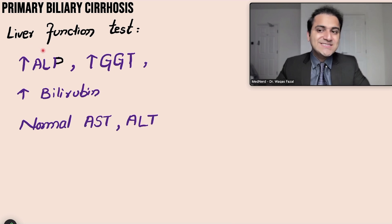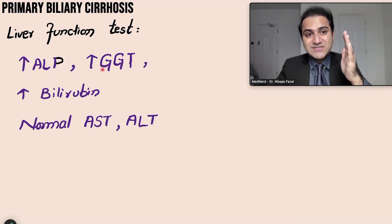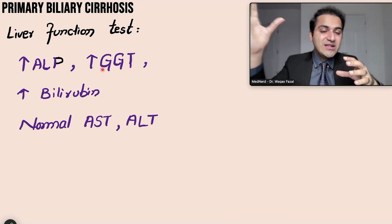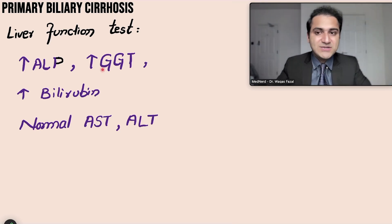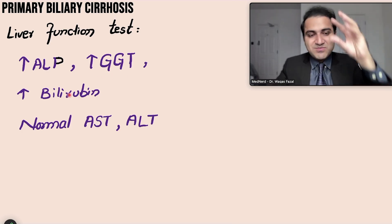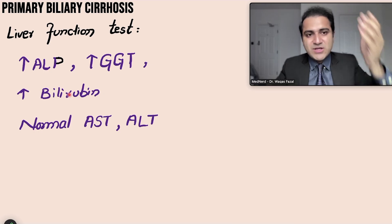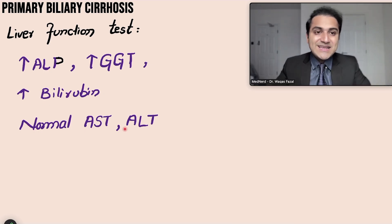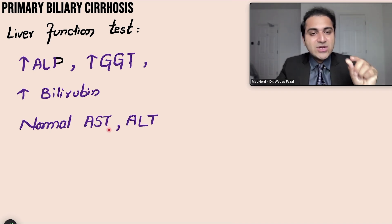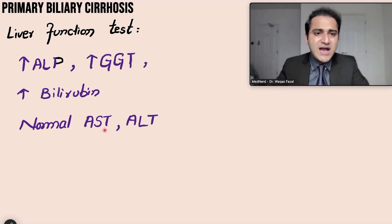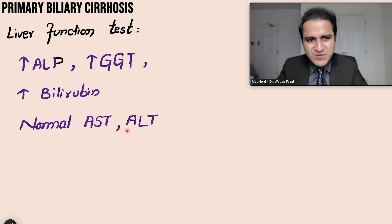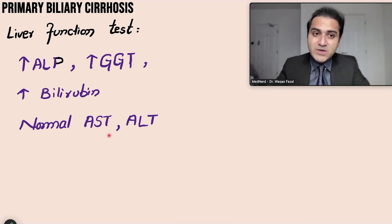On liver function tests, you will see high ALP and high gamma-glutamyl transferase because these enzymes are present in the bile ducts; when the ducts are damaged, they show an obstructive pattern. Bilirubin is elevated because bile cannot drain into the intestine. AST and ALT are normal or only mildly elevated because they are present in liver cells, not the ducts.